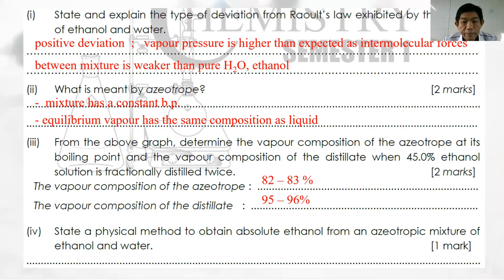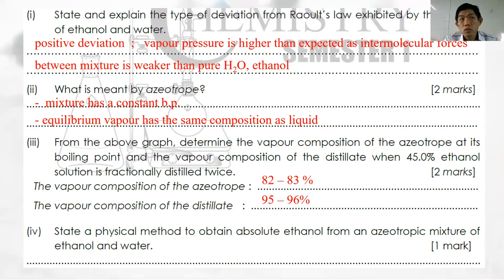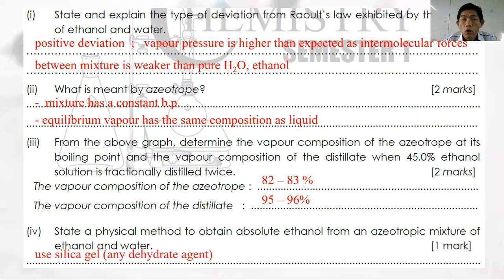Question 2d: What physical method can be used to obtain absolute ethanol from an azeotropic ethanol-water mixture? Fractional distillation cannot be used as it will yield the azeotropic mixture first. Instead, remove the water using a dehydrating agent such as silica gel, calcium chloride, or cobalt chloride.